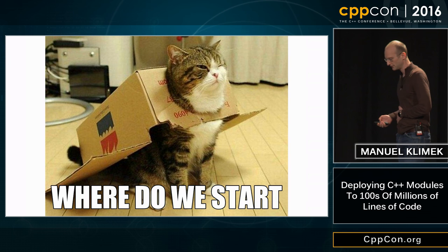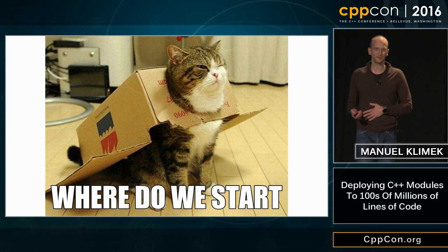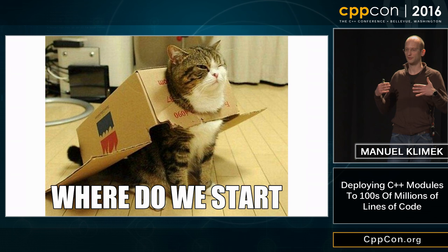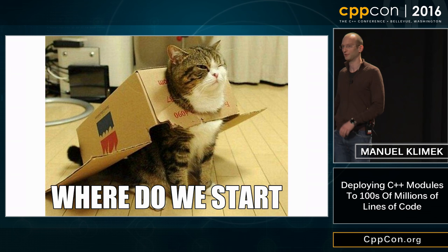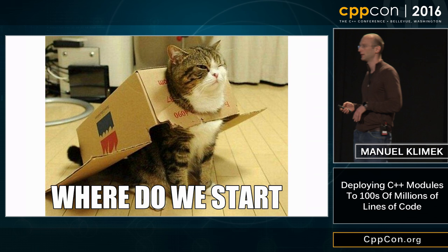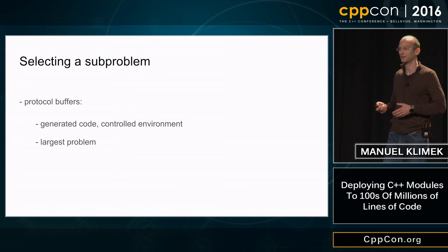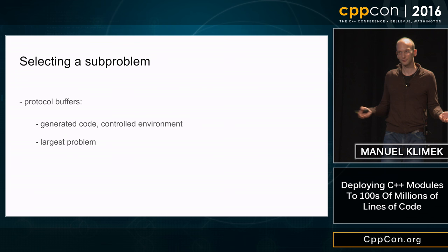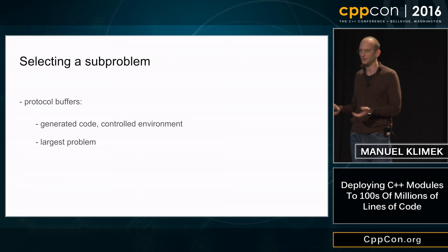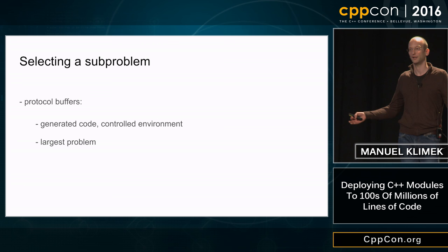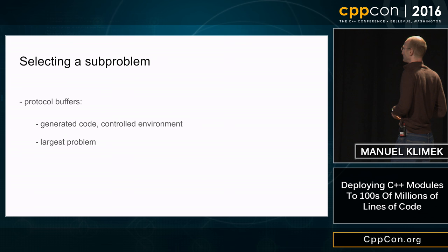Now we want to roll that out over all our code. The question is how to start. For such a large change, you want to find something small where, with very little effort, you get a lot of benefit. Your team needs to pay for itself incrementally over time — you can't spend 10 years developing something that hopefully has impact at the end. It turns out protocol buffers are the perfect example: it's the largest problem we found, and it's also comparably a very small problem to address, because if there are semantic changes needed, we just change the generator instead of changing code all over the code base.